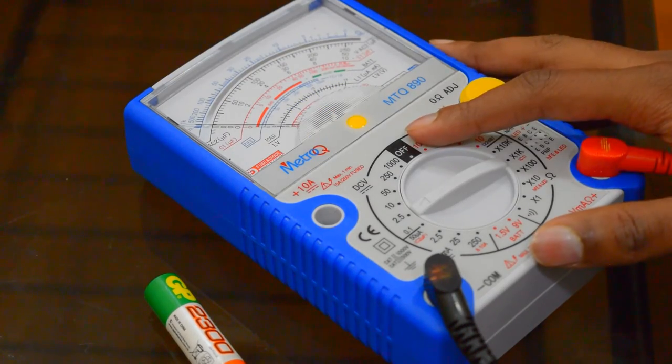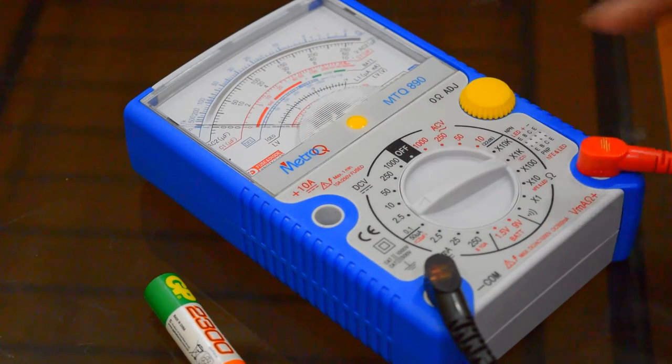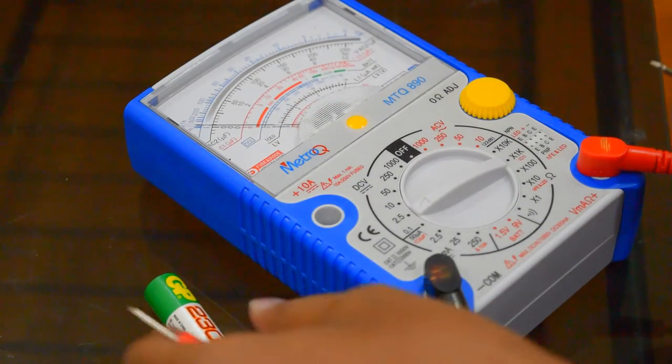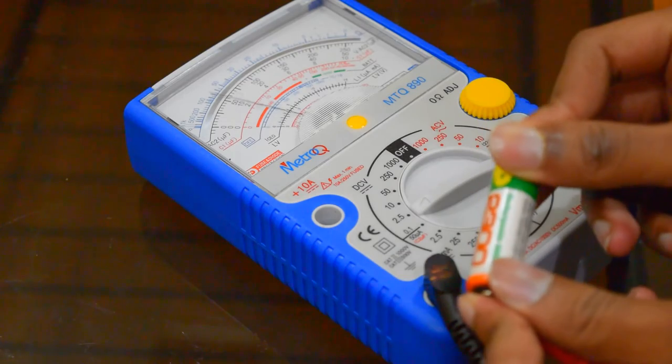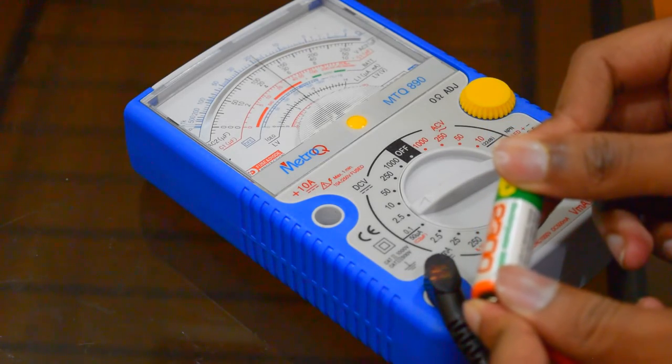The same functions can also be performed using an analog meter. I'll show you the DC voltage of this NIMH battery. It's showing approximately 1.2 volts.